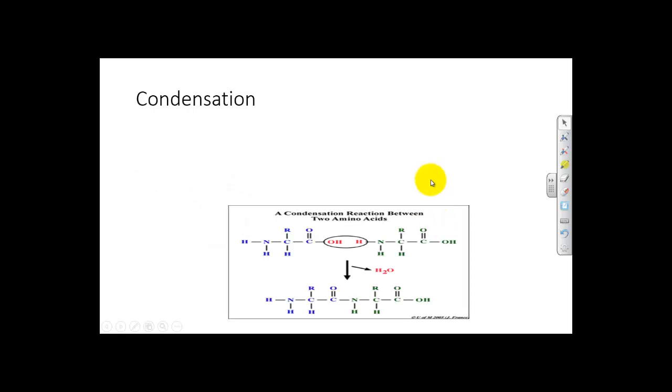So first we start off with a definition of condensation. Condensation is when you have two large molecules and they react together to form a larger molecule and a molecule of water. In our case anyway, it will be a molecule of water. The official definition just has it as a smaller molecule, in this case water. So you can see here we've got two amino acids. They're forming an amide and they're getting rid of this H2O to form water and this sort of dimer.